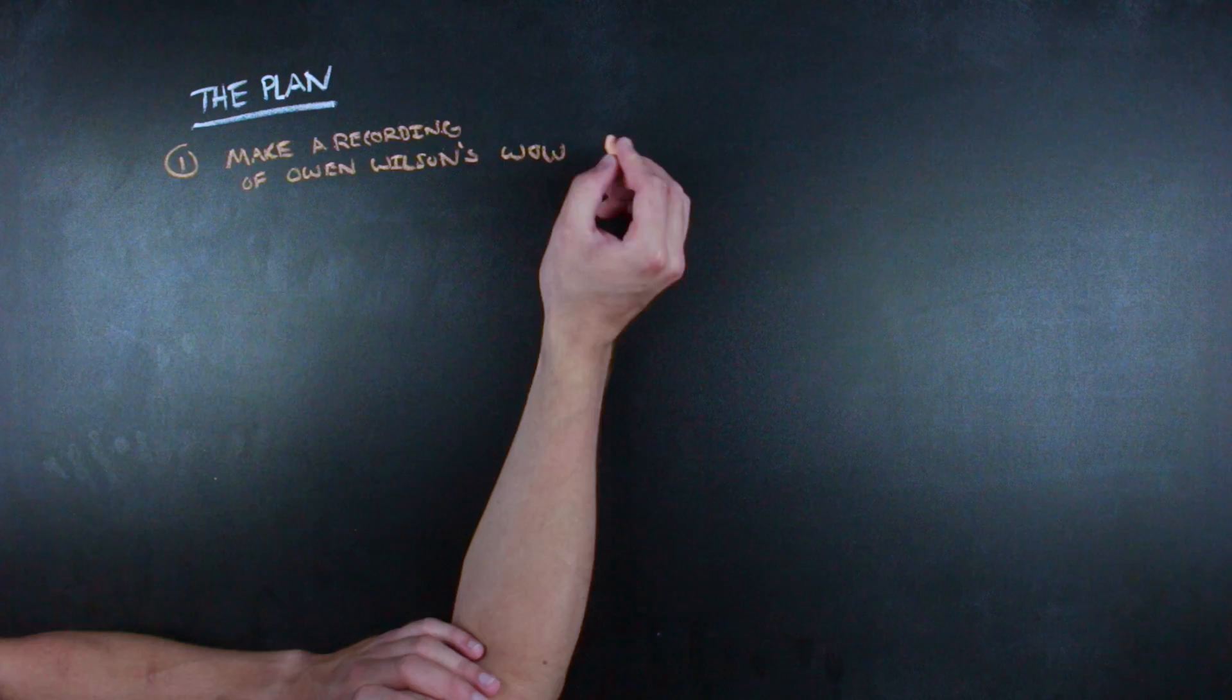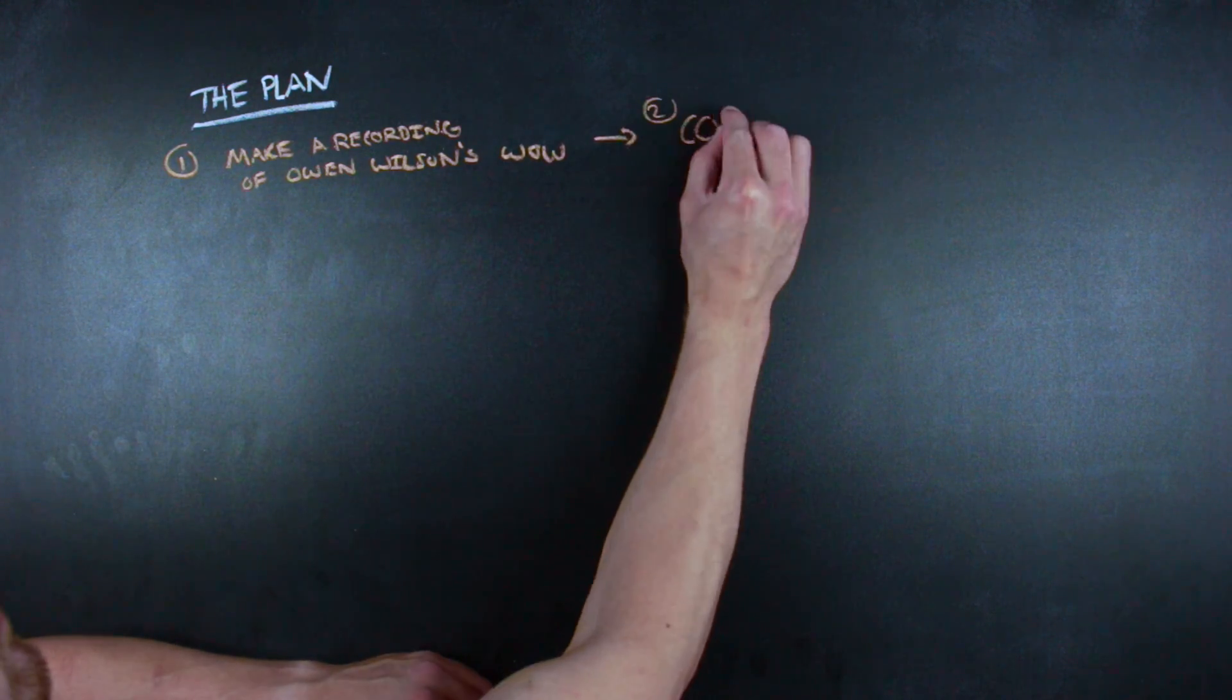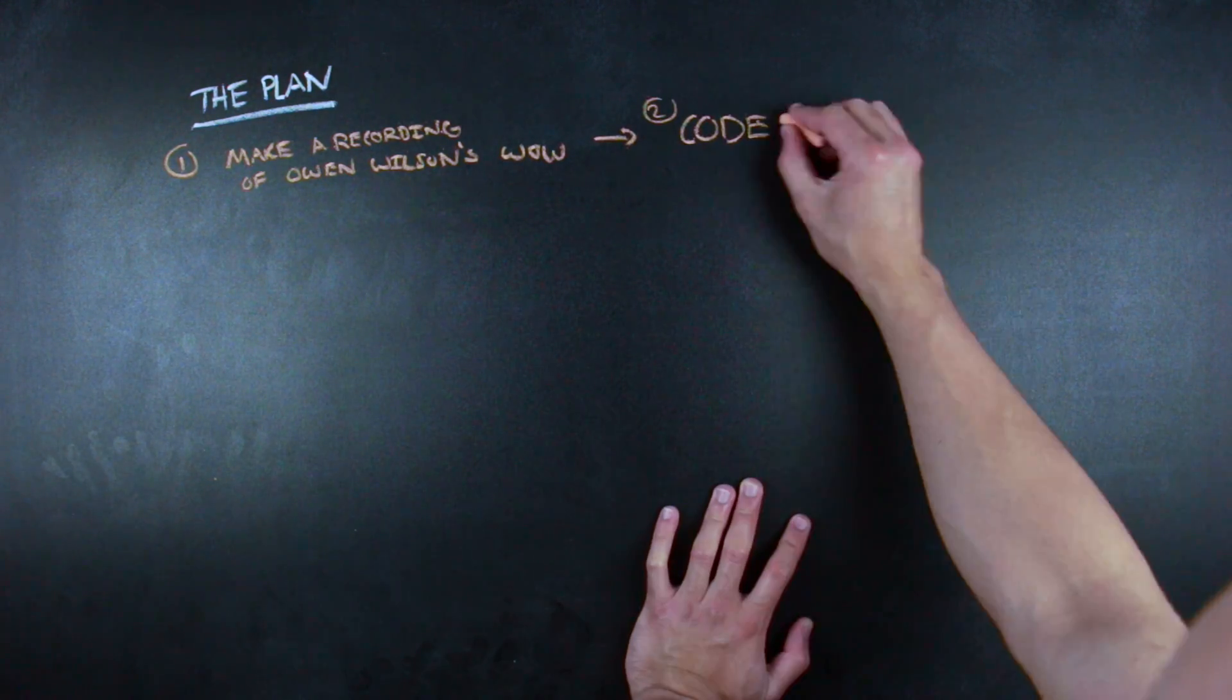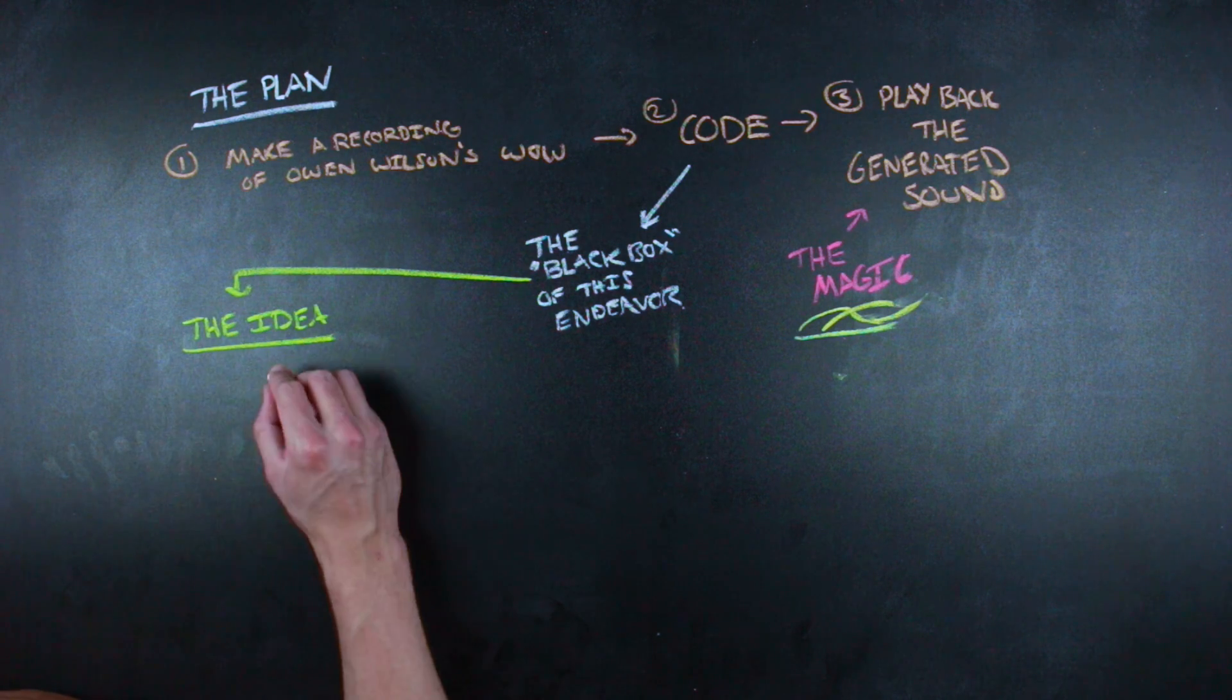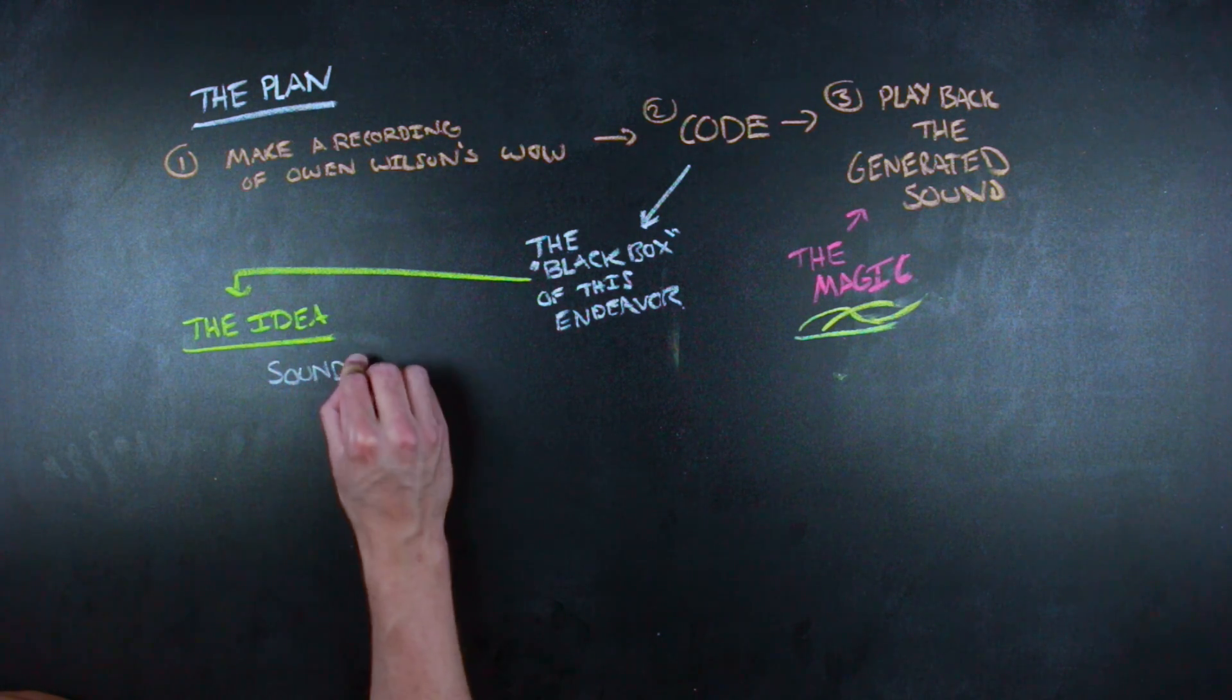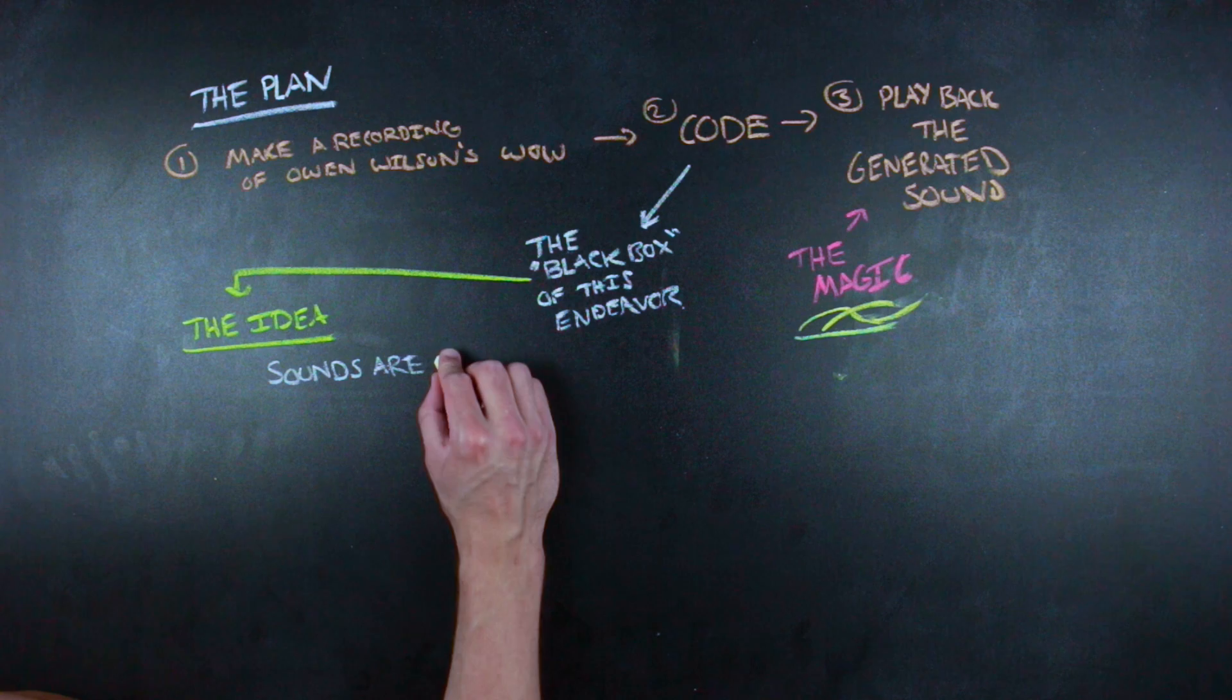Here's the plan. So there are three parts. First, we need to get a recording of Owen Wilson's Wow. Then we have to write some code, which is the black box of this operation. And then three, running this code on the sound file will make the magic happen, whatever that means at this point.